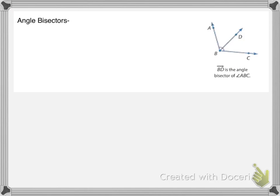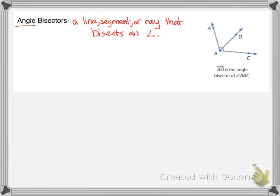The next thing to look at are angle bisectors. Angle bisectors do not bisect a side — they bisect an angle. An angle bisector is a line, segment, or ray that bisects an angle and splits it in half. Here, since the marks tell me those two angles are congruent, I can conclude that ray BD is the angle bisector of angle ABC. That means angle ABD is congruent to angle CBD — it splits it into two congruent pieces.